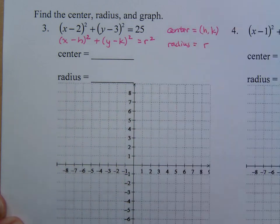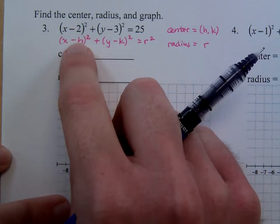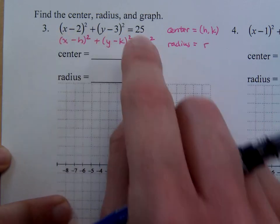So when you have a form that's given to you, like this x minus h and y minus k, when you try to pick the h and k off from the actual problem, you do the opposite.